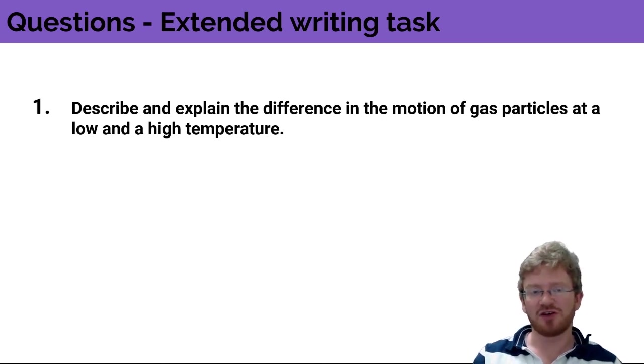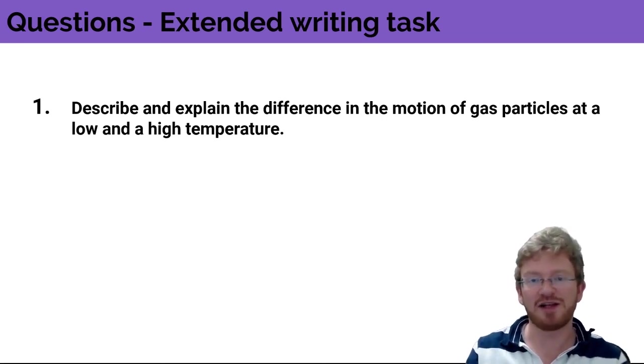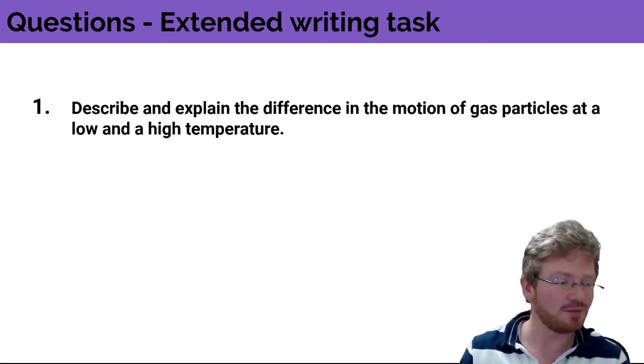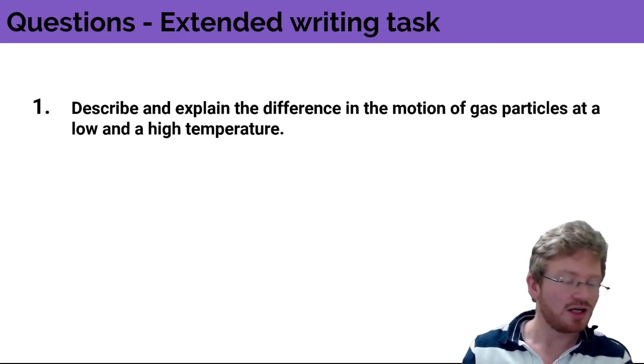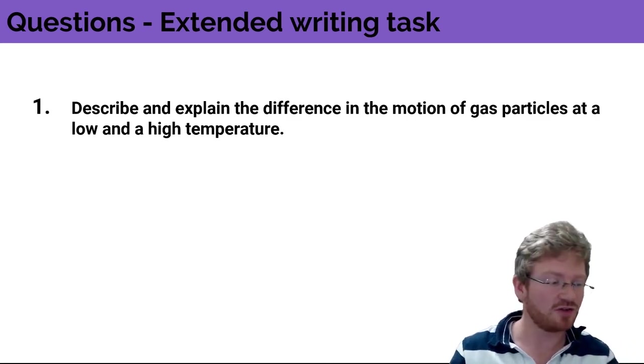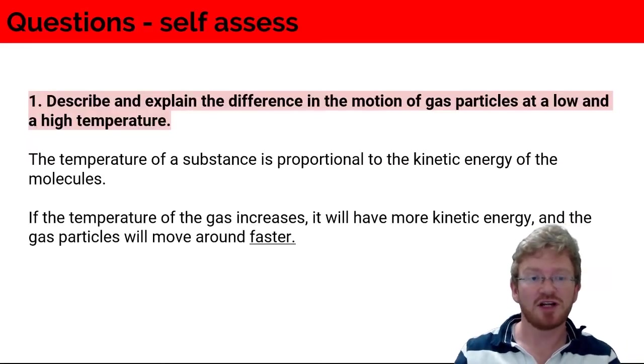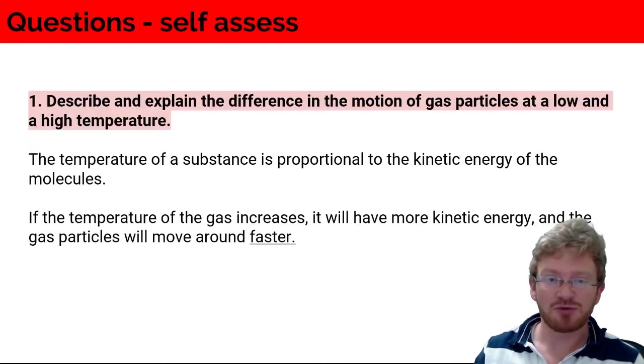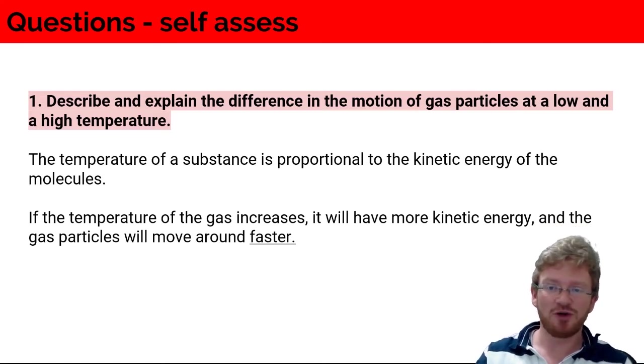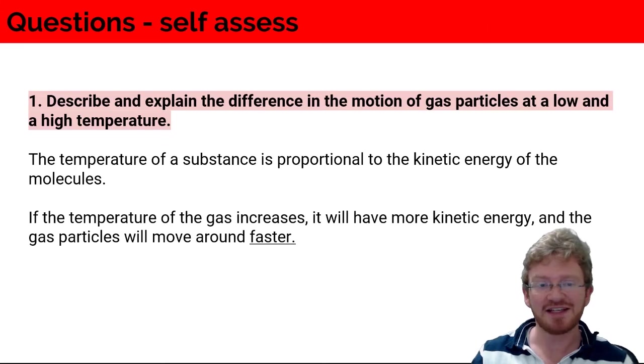I've got a little extended writing task for you. Describe and explain the difference in motion of a gas particle at high and low temperatures. The answer to that one is, the temperature of a substance is proportional to the kinetic energy of the molecules. If the temperature of a gas increases, they've got more kinetic energy and the gas particles move around faster. So I'm looking for anything to do with more temperature, they move faster.